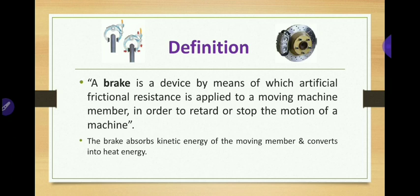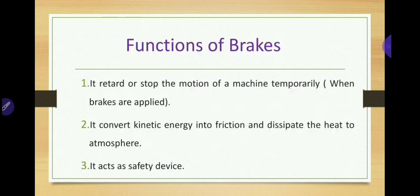In the process of performing the function of a brake, the brake absorbs the kinetic energy of the moving member. This energy absorbed by the brake is dissipated in the form of heat. This heat is dissipated into the surrounding air so that excessive heating of the brake lining does not occur. In some cases, water, oil, or liquid media can be circulated through passages in the brake drum.